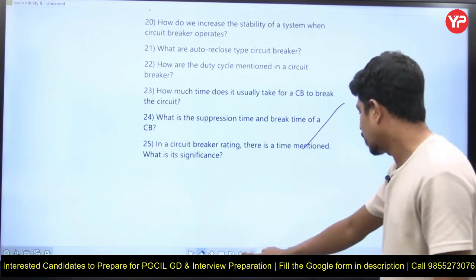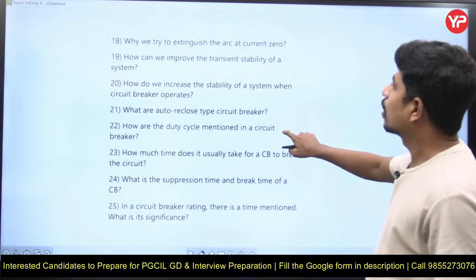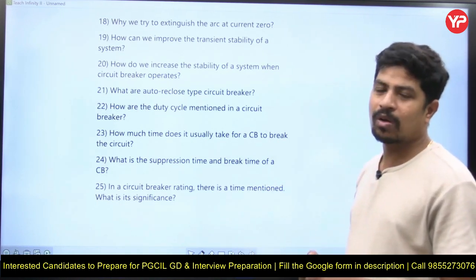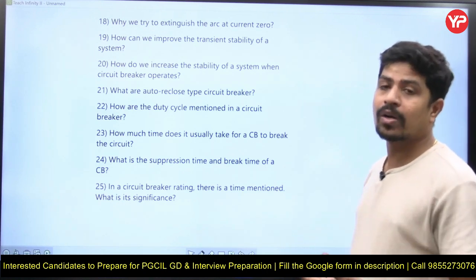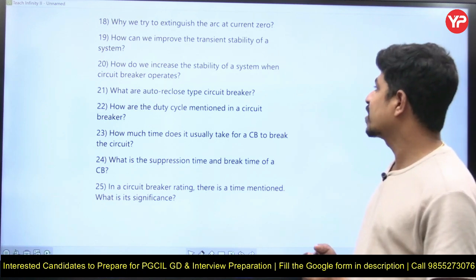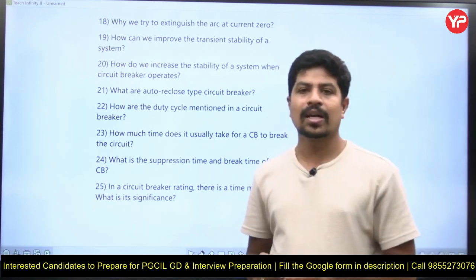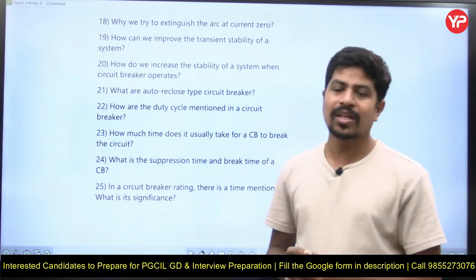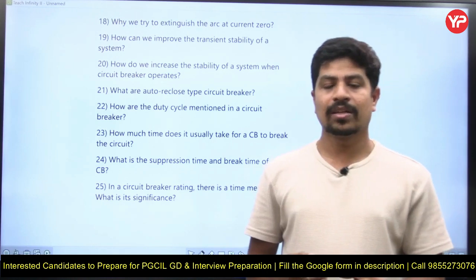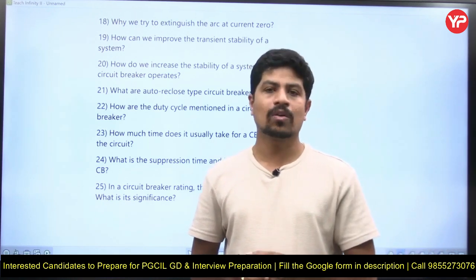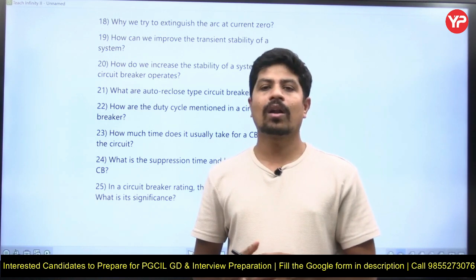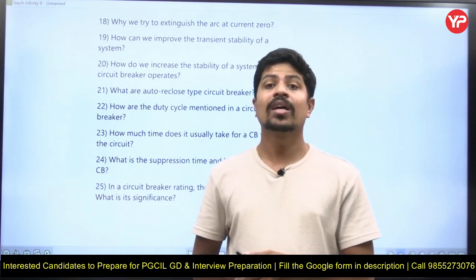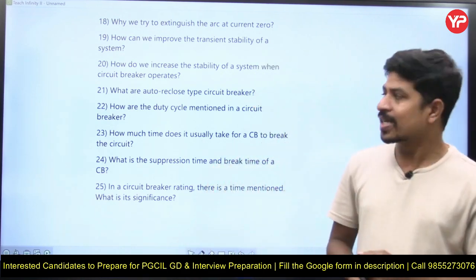Why do we try to extinguish the arc at the current zero point? At current zero, the amount of current is zero, therefore the amount of coolant required to quench the arc is less. How can we improve transient stability? Stability is divided into steady-state stability and transient stability. Methods include resistance neutral grounding of the synchronous generator, connecting a flywheel, using a triple circuit breaker, using bundle conductors, or using a series capacitor.